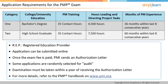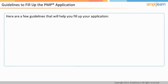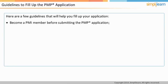For more details, refer to the PMP Handbook on the PMI website. You should become a PMI member before applying for the PMP examination. If you are not already a member, members get a discount of $150 for the PMP application, which is more than the cost of membership itself. This will help you save money. Becoming a member is a fairly straightforward process and can be completed online at www.pmi.org.